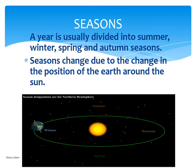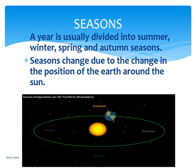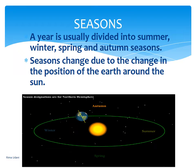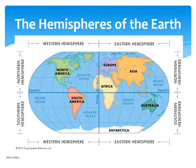Now let's see how seasons are affected because of revolution. A year is usually divided into summer, winter, spring, and autumn. Seasons change due to the change in the position of the earth around the sun. The earth is divided into four hemispheres: northern, southern, eastern, and western. On your screen you can see the eastern hemisphere, the western hemisphere, the southern hemisphere, and the northern hemisphere.